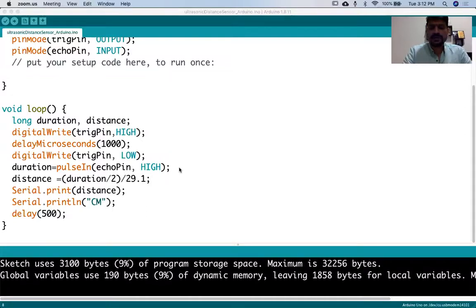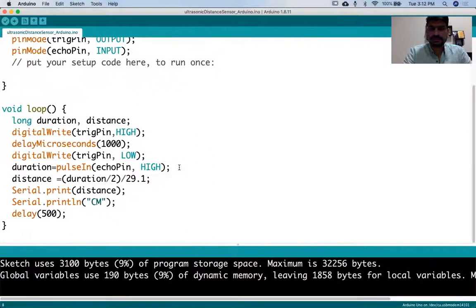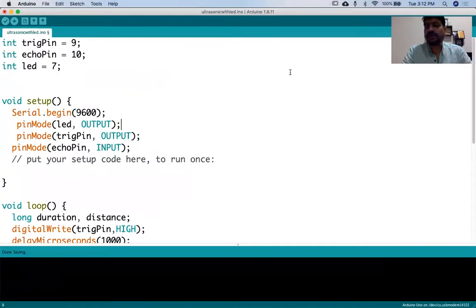In this program we use the LED and try to understand how it works. In this particular program, as you can see here, everything is the same. The trigger pin is 9, the echo pin is 10, the LED pin is 7.